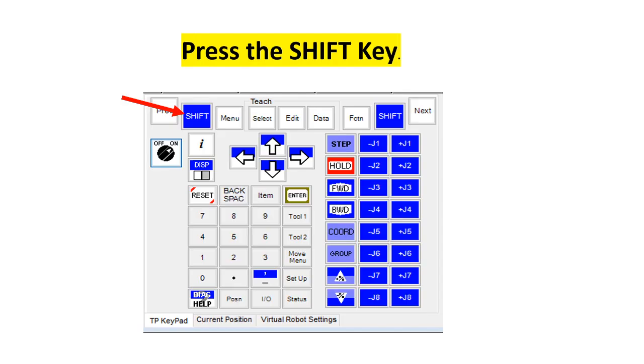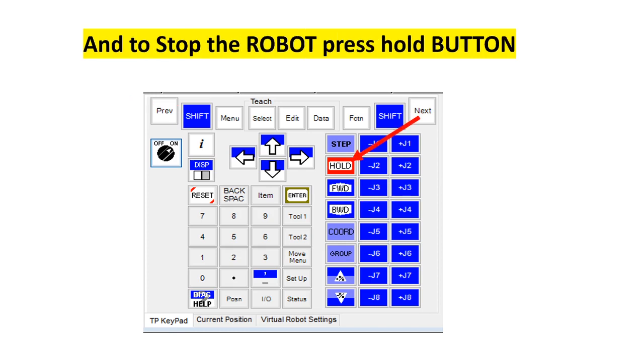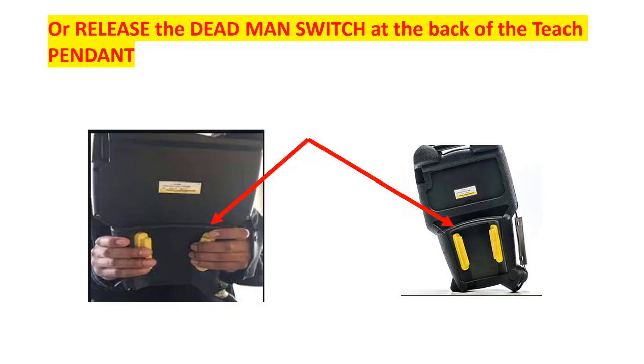Press the shift key together with the dead man switch at the back of the touch pendant, and then press either forward or backward key once. And to stop the robot, press the hold button, or release the dead man switch at the back of the touch pendant.